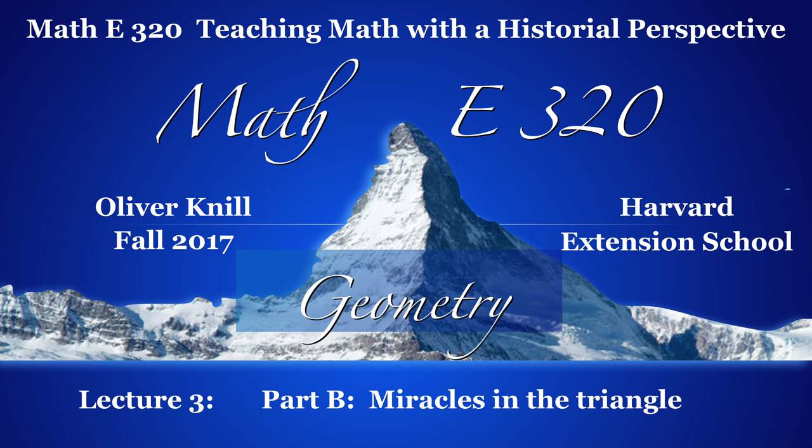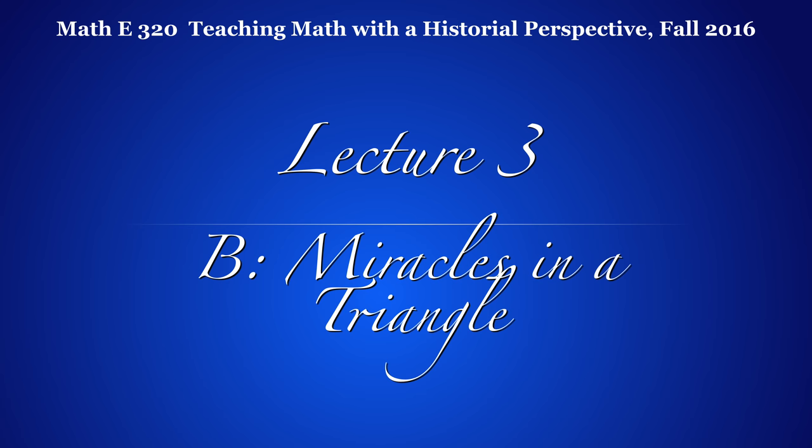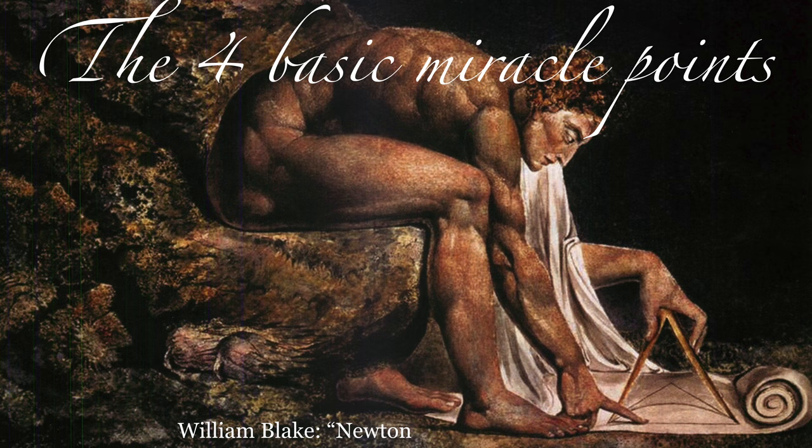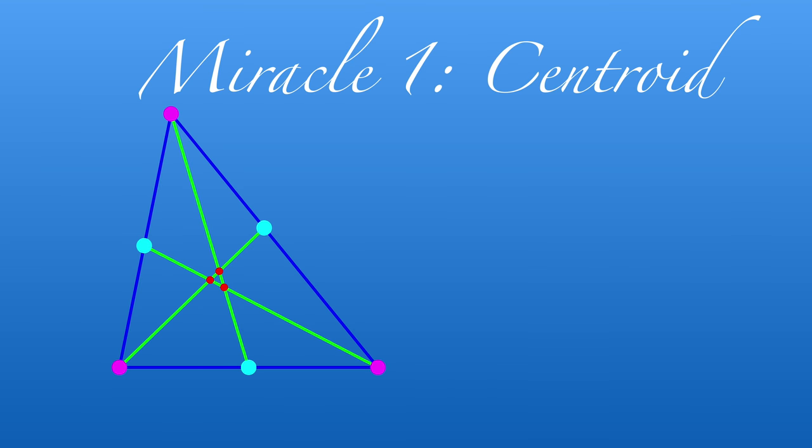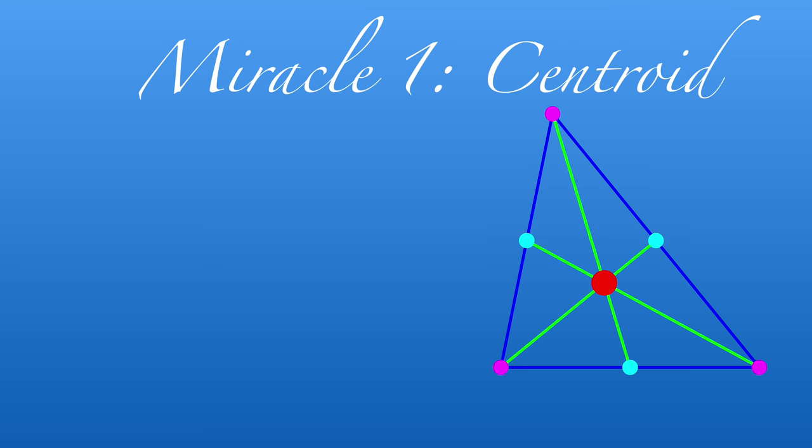In this part B, we look at some special points in the triangle, then learn about the beautiful theorem of Thales. The first is the centroid. We take the side bisectors in a triangle and connect them with the opposite vertex. We get three lines. There is no a priori reason why they should intersect, but they do.